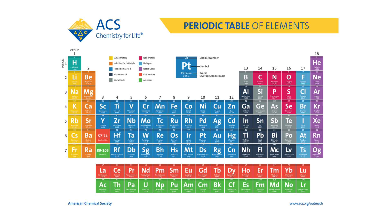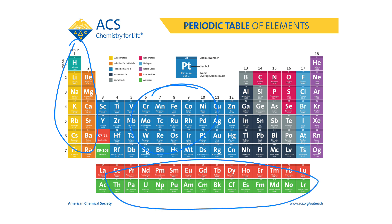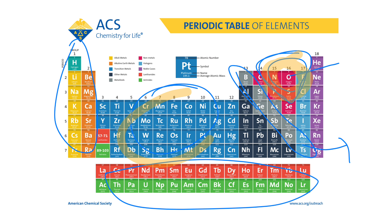Most of the elements on the left side, in the center, and at the bottom are metals. Some of the upper elements are non-metals, while the gray elements are metalloids. So we have metalloids, non-metals in the upper right region, and all remaining elements are metals. That's all for today, thank you so much.